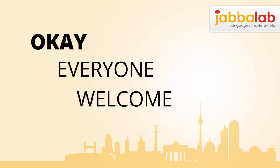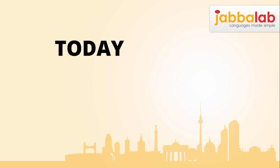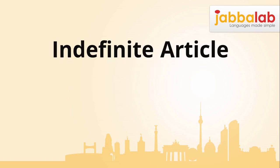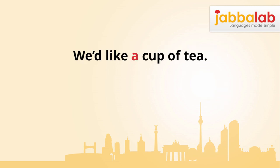Welcome to grammar class. Today we're learning about the German indefinite article. The indefinite article in English is the word 'a', which changes into 'an' if the following word starts with a vowel. In the plural, we say either 'some', 'any', or nothing at all. For example: 'we'd like a cup of tea.'